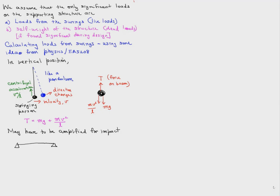Now we may have to amplify this force to account for some impact. If we apply a load gradually on a structure, the deflection is delta, versus if we apply a load abruptly, the deflection can be as much as 2 delta because of dynamic effects.